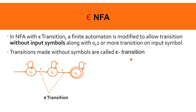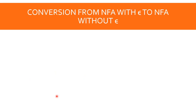Here is an example. We have states Q0, Q1, Q2. From Q0, I go to Q1 on epsilon — that is without any input. From Q0, I go to Q1; from Q1, I go to Q2. So these transitions are known as epsilon transitions. This is the general concept of epsilon NFA. Now the conversion from NFA with epsilon to NFA without epsilon.